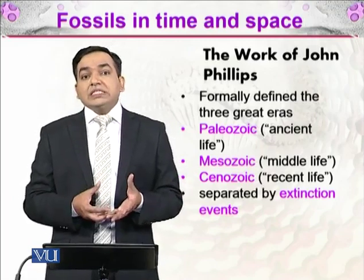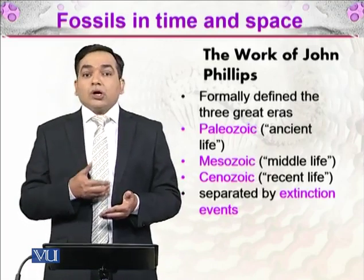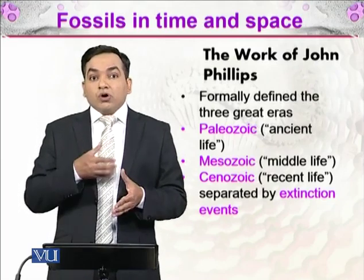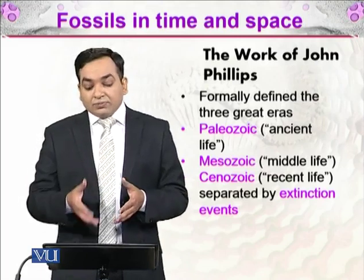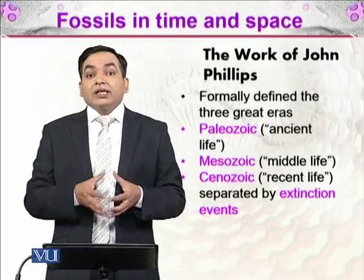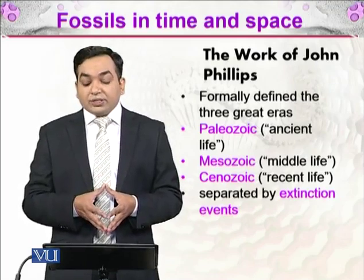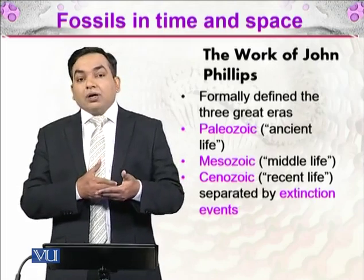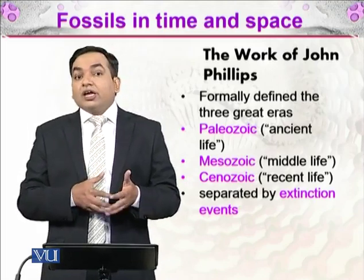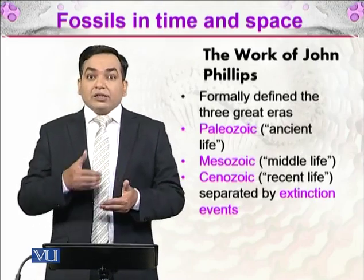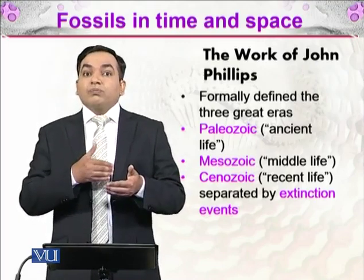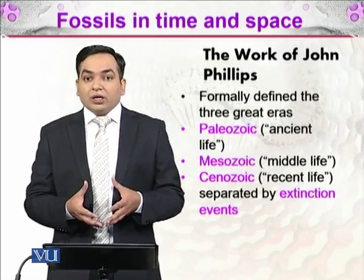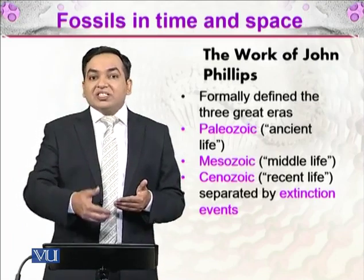Then comes the Mesozoic, where 'meso' means between and 'zoic' means life — so it refers to middle life. Organisms of the Mesozoic era are comparatively more complex than those of the Paleozoic, but also more recent. After that comes the Cenozoic, meaning recent life, representing the most complex and most recent organisms. All three eras are separated by extinction events — after the Paleozoic, there is a clear demarcation where fossils of those organisms disappear, new organisms evolved throughout the period, forming Mesozoic life forms, and so on into the Cenozoic.